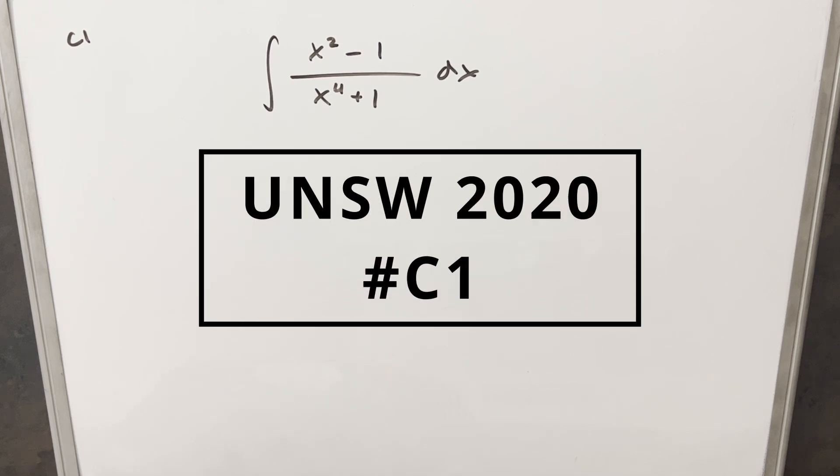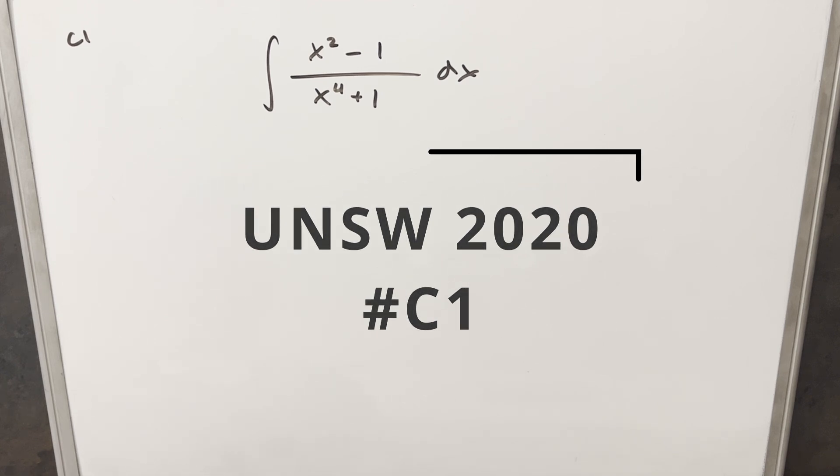Okay, we have here today an interesting integral from the UNSW Integration Bee 2020. This was problem C1. We have the integral of x squared minus 1 over x to the 4th plus 1 dx.